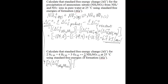You're going to subtract from that 2 times the standard free energy of formation for nitrogen gas — multiplying by 2 because the stoichiometric coefficient in the balanced chemical equation is 2 — plus 4 times the standard free energy of formation for hydrogen gas, since its stoichiometric coefficient is 4, and 3 times the standard free energy of formation for oxygen gas, since its stoichiometric coefficient is 3.